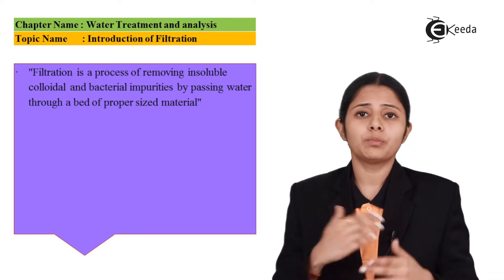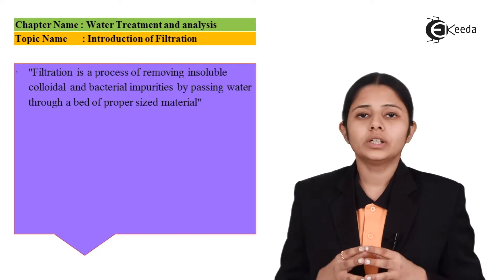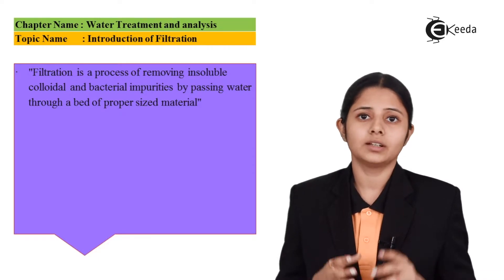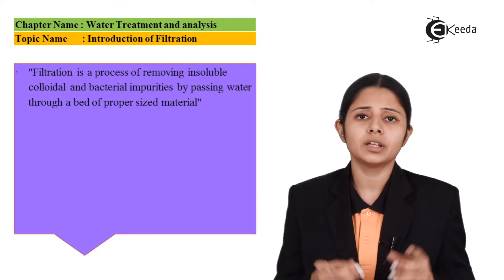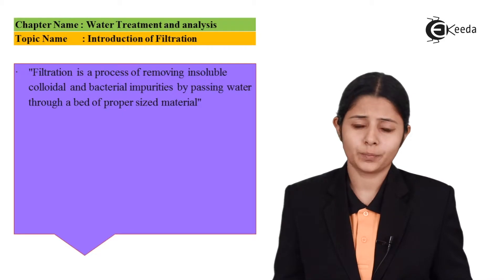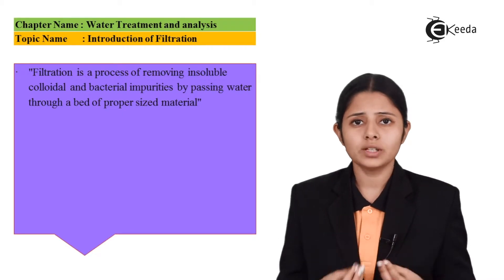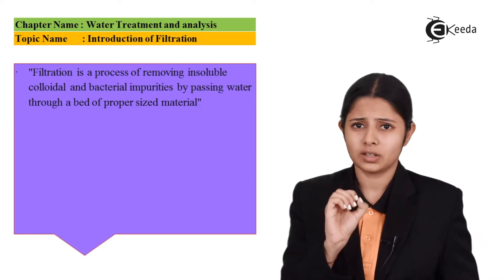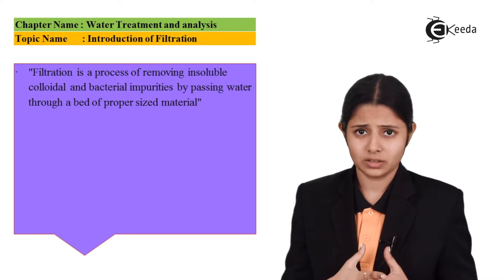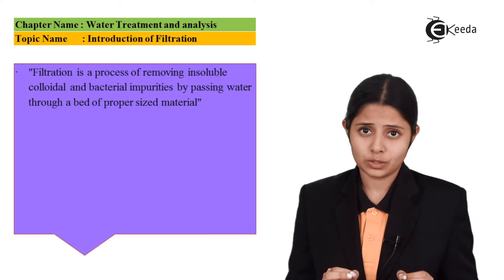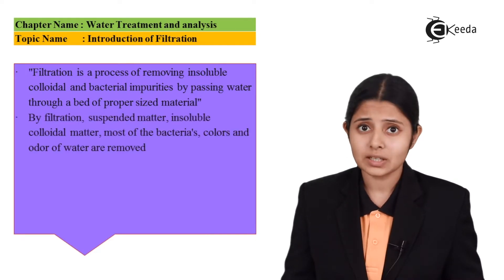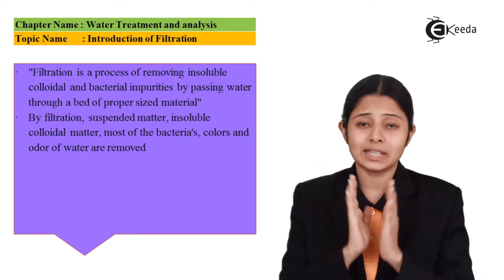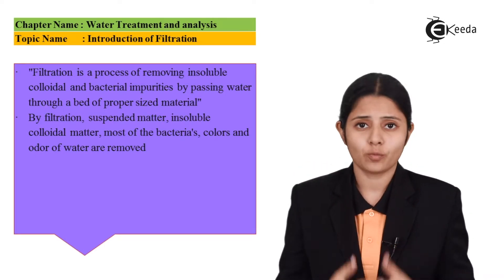So what types of impurities does filtration exactly remove? Filtration is known for removing insoluble, colloidal, and bacterial impurities. When I say a substance is a colloidal substance, that means the substance has a diameter in nanometers — that is 10 raised to minus 9, or 10 raised to minus 10 meters. Those substances are extremely small. But if these substances are insoluble in water, then by using extremely small pored filter papers, we can actually remove those substances from water.